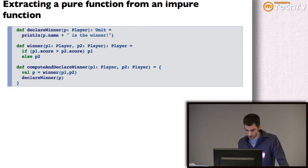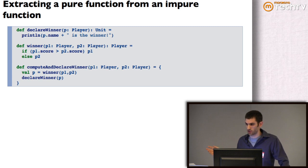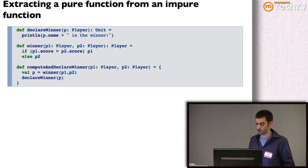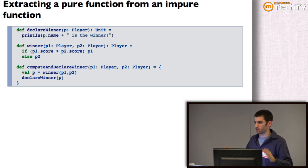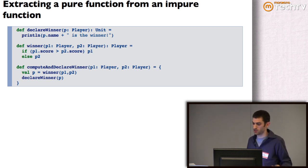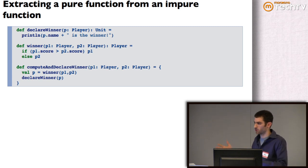I've broken out the logic of computing the winner into a separate pure function. It's still taking two players, but rather than having the side effect of printing to console, it's just returning the player that's the winner. We can call that pure function and then pass the result to the function that has the side effect. This is a very general thing you can do: any time you have an impure function, you can factor it into a pure core and a side effect that consumes the output.